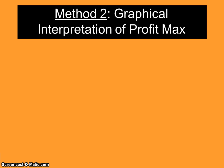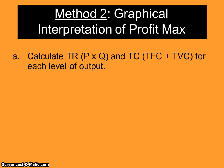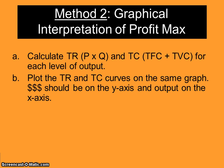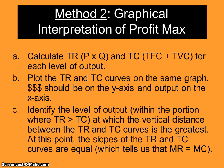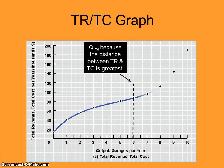Method number two is the graphical interpretation of profit maximization. Here you calculate total revenue and total cost for each level of output, plot these two curves on the same graph, and identify the level of output where the vertical distance between total revenue and total cost is the greatest. That area between the two curves, where total revenue exceeds total cost, represents profit. At six garages, the vertical distance is greatest, and the slopes of the two curves will be equal at that point.